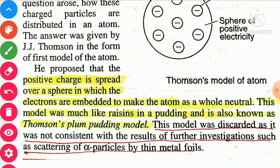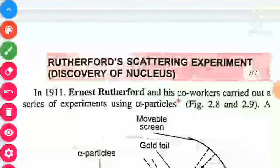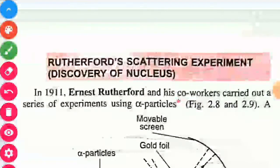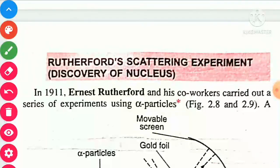This model was discarded as it was not consistent with the results of further investigations, such as the scattering of alpha particles by thin metal foil. Next is Rutherford's nuclear atomic model, including the alpha particle scattering experiment.